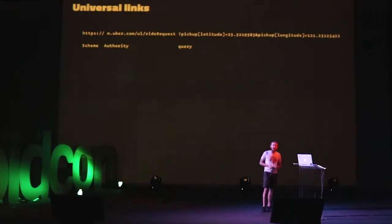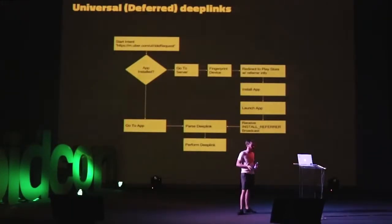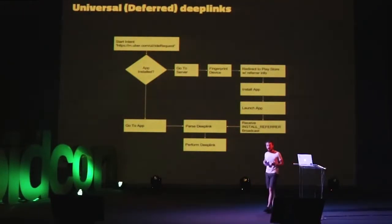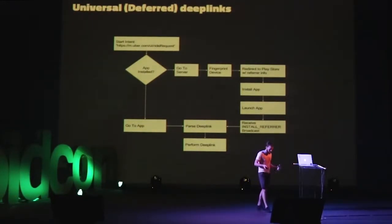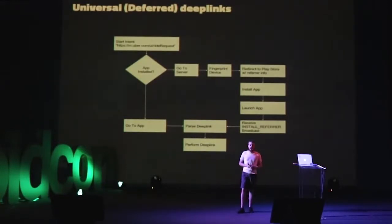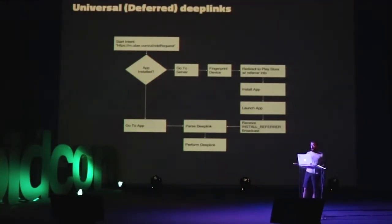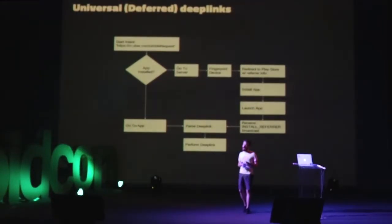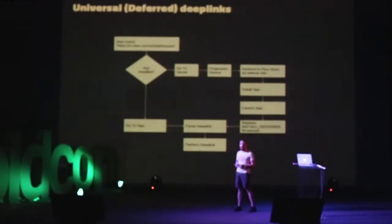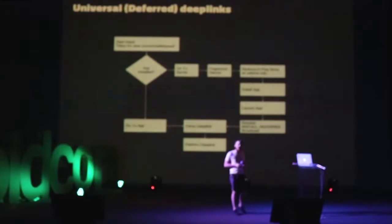Let's dive into what happens when the Uber app isn't installed and the user clicks a link like this. With a standard universal link, a user in a third-party application clicks a link. The Android system tries to fire the URI and asks what can handle it. If the app's not installed, that goes to your web server — in our case m.uber.com — where we can make some assumptions. Looking at the user agent on a mobile device, we probably don't have the app installed. So we're on the server and we next want to fingerprint the device, derive some unique information, store affiliation data, and preserve the intent the user had when they started the flow.